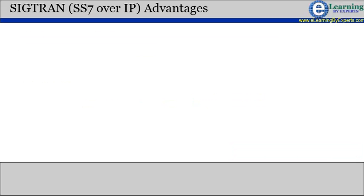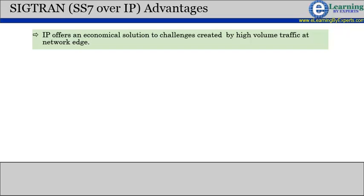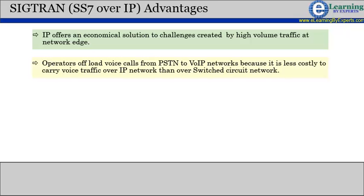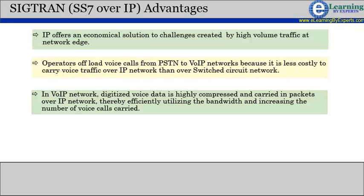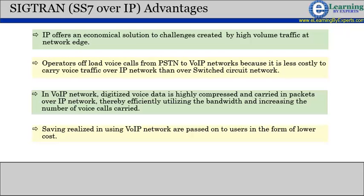Here we present various advantages of SS7 over IP transport, i.e., SIGTRAN. IP offers an economical solution to challenges created by high-volume traffic. Operators offload voice calls from PSTN to VoIP networks because it is less costly to carry voice traffic over IP networks than over switched circuit networks. In VoIP networks, digitized voice data is highly compressed and carried in packets over IP, thereby efficiently utilizing bandwidth and increasing the number of voice calls carried. Savings realized using VoIP networks are passed on to users in the form of lower costs.